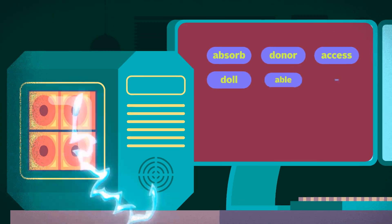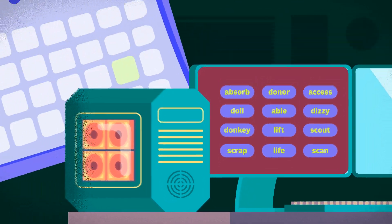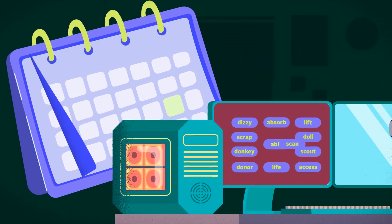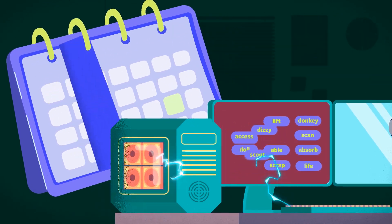If you have a computer that can check 10 combinations a second, it will take one and a half years to check all the possible combinations of a 12-word seed phrase if you had all the words.